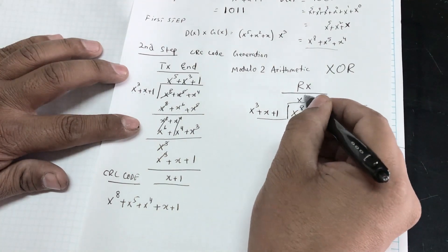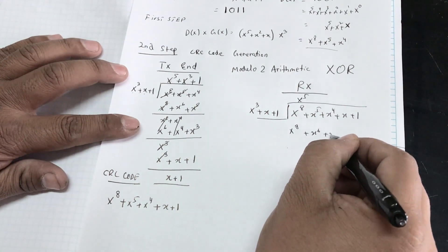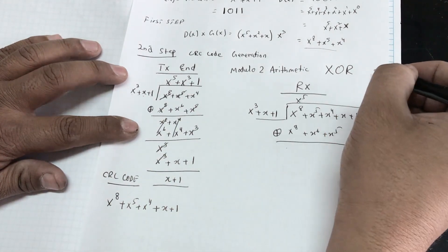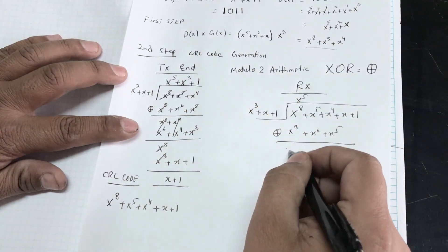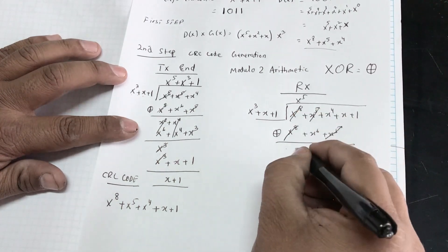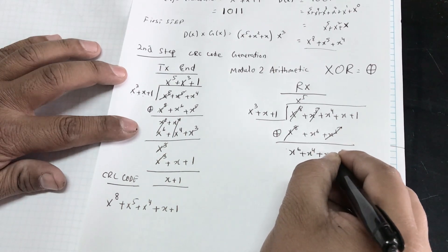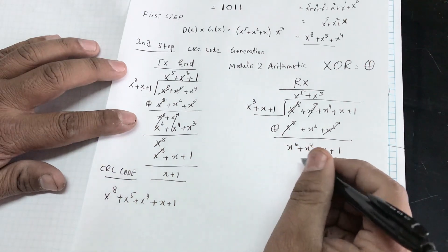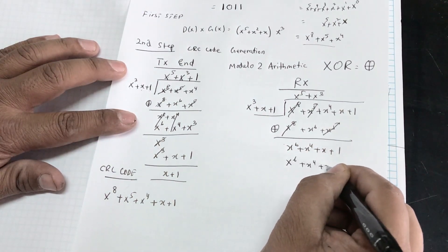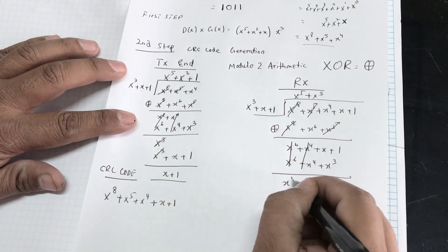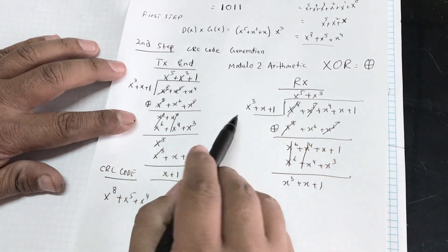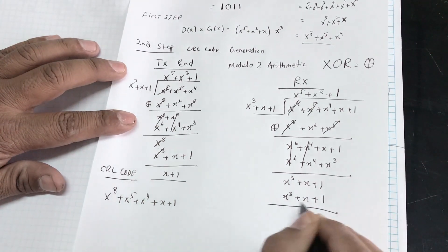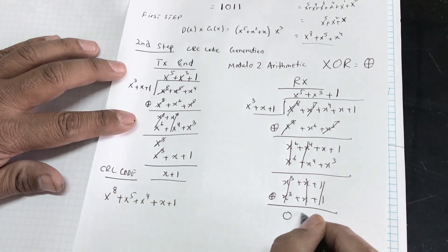At the receiving side: multiply generator by x⁵ to get x⁸ + x⁶ + x⁵; XOR cancels x⁸ and x⁵, leaving x⁶ + x⁴ + x + 1. Multiply generator by x³ to get x⁶ + x⁴ + x³; XOR leaves x³ + x + 1. Finally multiply generator by 1 to get x³ + x + 1; XOR gives 0, 0, 0.